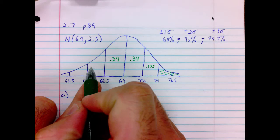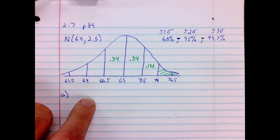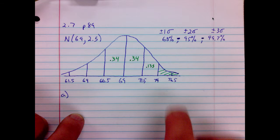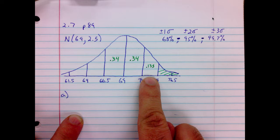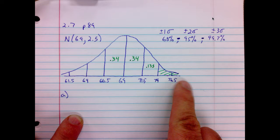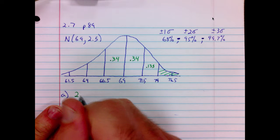And so will this side. So this area here: 50% below 69, 34% here will be 84%, another 13.5% will be 97.5%. The rest of this is the complement, or 100% minus 97.5%, which leaves 2.5%.